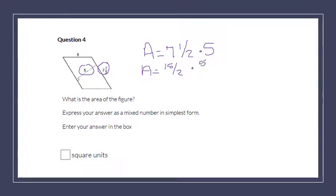I'm going to change 5 to an improper fraction as well, just so that it's easier to multiply. 5 times 15 is 75. 2 times 1 is 2. When I simplify that, 2 goes into 75 37 times with 1 left over. So 37 and a half square units.